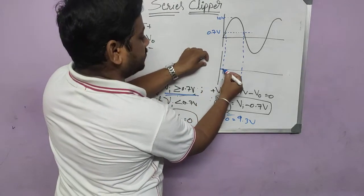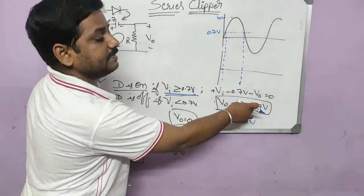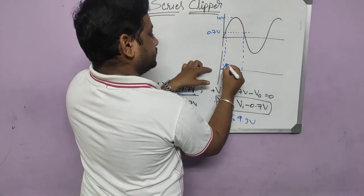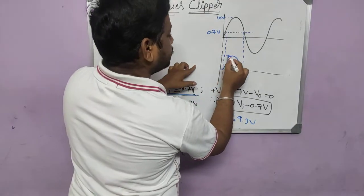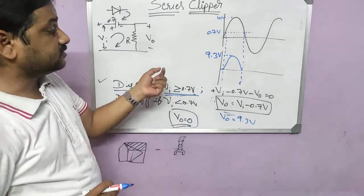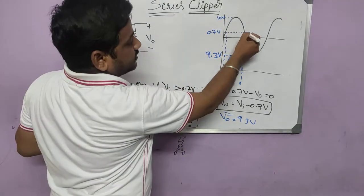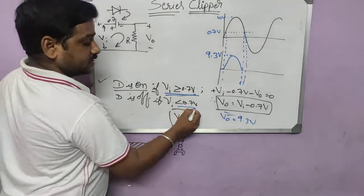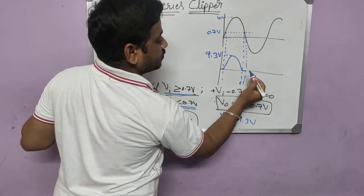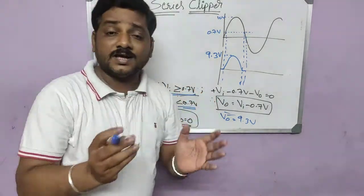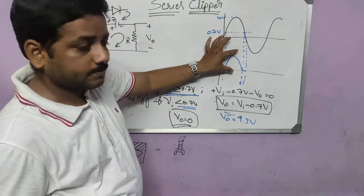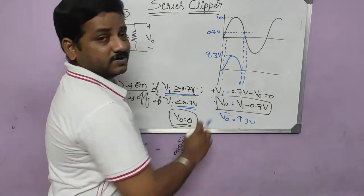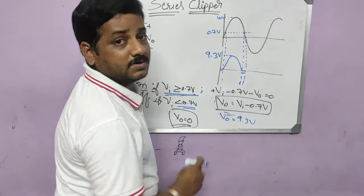From the 0.7V point, the output follows the input but is shifted down by 0.7V, reaching a peak of 9.3V — not 10V, because we lost 0.7V to the silicon diode. When the input falls back below 0.7V, the output returns to zero. That is the slight difference between the ideal and practical diode: with an ideal diode, the complete positive cycle is obtained; with a practical silicon diode, we lose 0.7V and the output starts only after 0.7V. For germanium (0.3V drop), the output peak would be 9.7V.